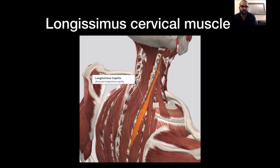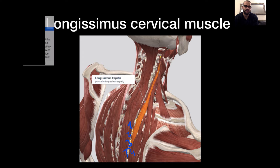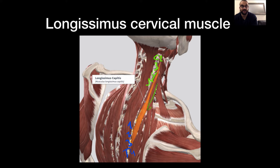The cervical longissimus muscle originates from T4 to T1 and inserts at the transverse process of C2 to C5. When these muscle fibers contract, they extend the neck, pulling it backwards, and also rotate the neck. You can see the capitis longissimus muscle lies right next to it.